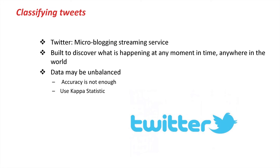We have arrived at the end of this lesson. In this lesson, we have seen an application of Twitter classification. Twitter is a microblogging stream service built to discover what is happening at any moment in time — more specifically, what is happening now. Data may be unbalanced in many data streams, so it's always important not only to look at accuracy, but also at other measures such as kappa statistics.